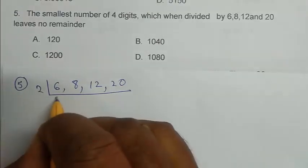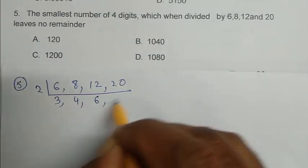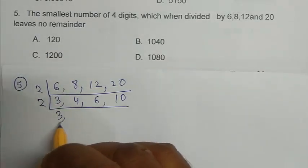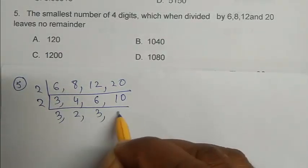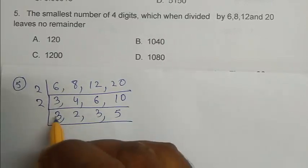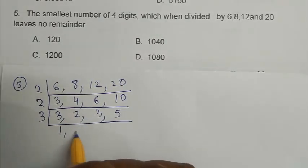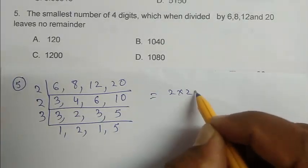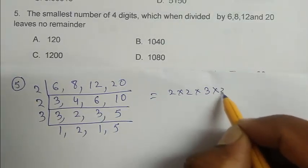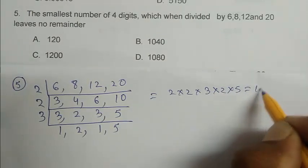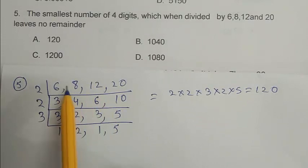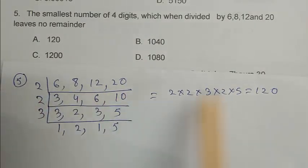2, 3, 4, 6, 10. 2, 3, 2, 3, 5, 3, 1, 2, 1, 5. It's become 2 into 2 into 3 into 2 into 5. That is 120. LCM of this 4 number, sorry, this 4 number is 120.